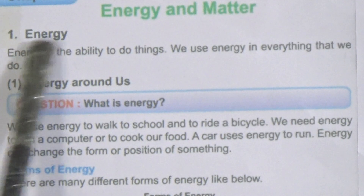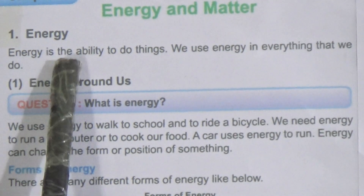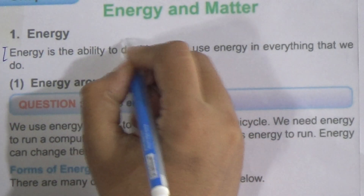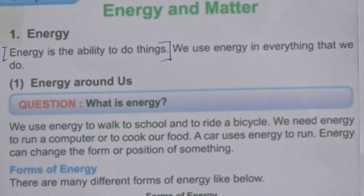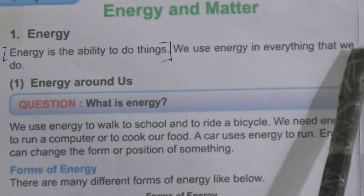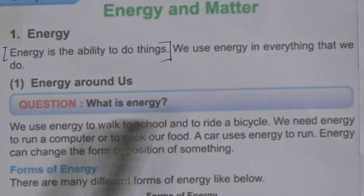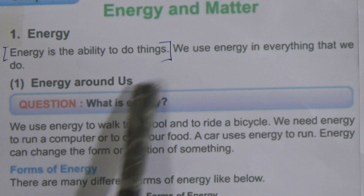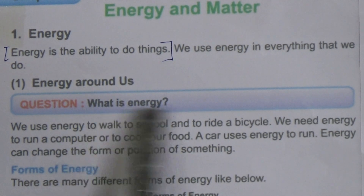Dear students, our chapter 5 is Energy and Matter. The first topic is energy. Energy is the ability to do things. This is the definition of energy: energy is the ability to do things. We use energy in everything that we do. Now let's come to the next point — energy around us. The question is: what is energy?